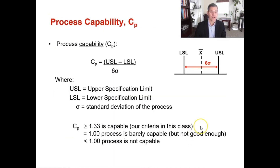Now let's learn how to calculate process capability. The process capability (CP) is simply the upper specification limit minus the lower specification limit, divided by 6 multiplied by the standard deviation of the process. Anything over 1.33 is a capable process.